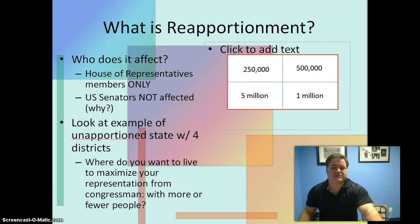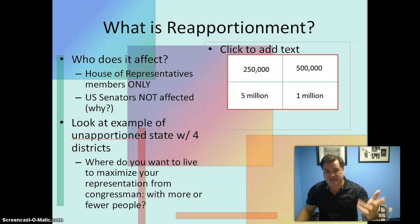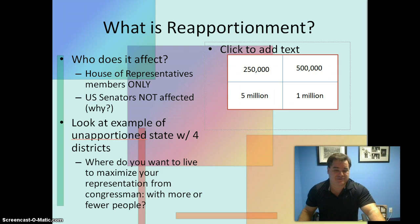The first question I want you to address on the Google form is: why aren't U.S. senators affected by reapportionment or redistricting? If you think about it for just a couple of minutes, it'll totally make sense. Keep watching and maybe you'll be able to figure it out from the following example.